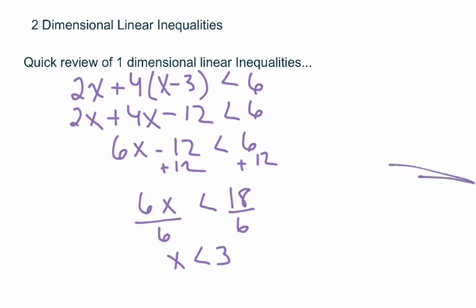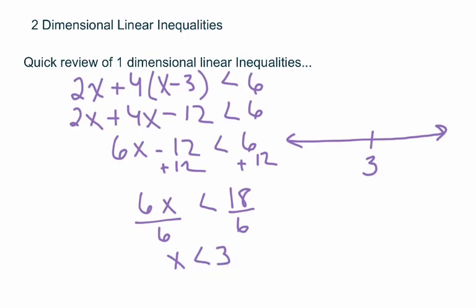We covered this in unit 1. You solve these exactly the same way that you solve linear equations, except you have that inequality, and you do flip the inequality if you multiply or divide by a negative. When it comes to graphing them, they are graphed on a number line, and the only number I required you to put on the number line was a 3. This is x is less than 3, so numbers less than 3 are found to the left.